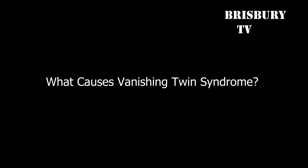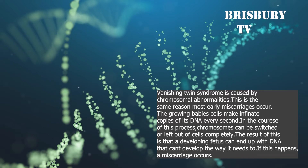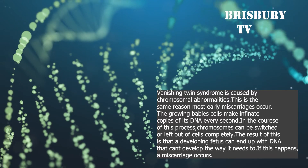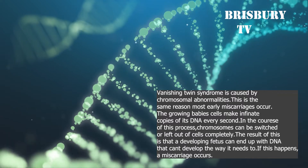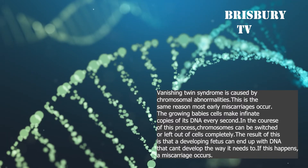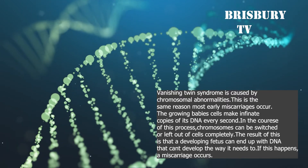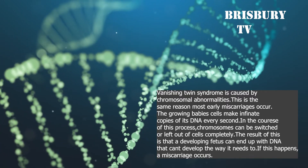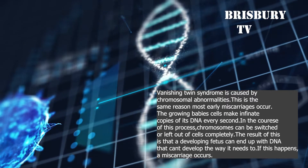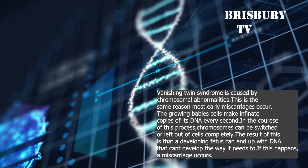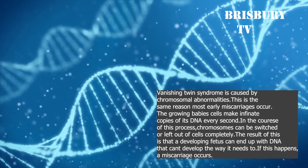Vanishing Twin Syndrome is caused by chromosomal abnormalities. This is the same reason most early miscarriages occur. When an embryo implants in your uterus and starts to develop, the growing baby's cells make infinite copies of its DNA every second. In the course of this process, chromosomes can be switched or left out of cells completely. The result is that a developing fetus can end up with DNA that can't develop the way it needs to. If this happens, a miscarriage occurs.